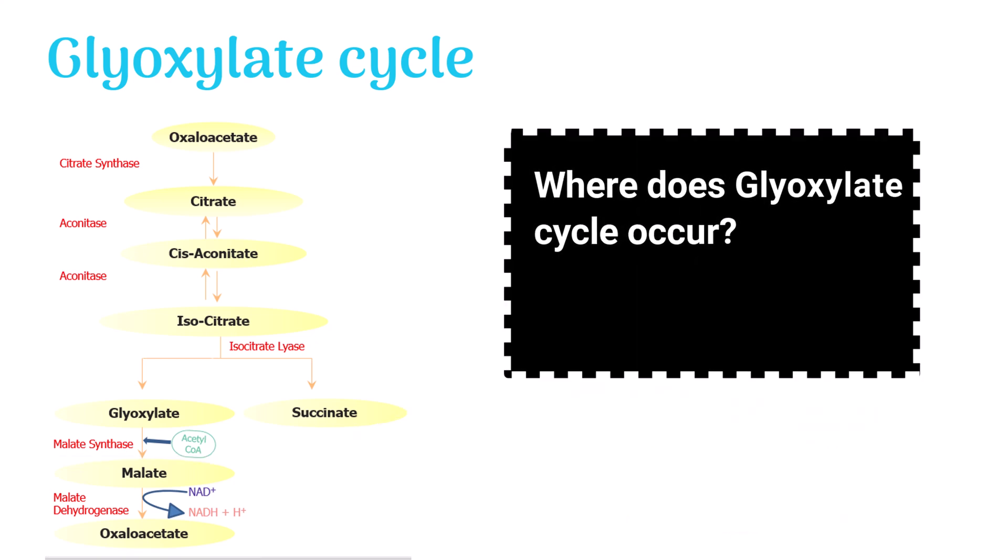Where does glyoxylate cycle occur? Let's see the answer. Glyoxylate cycle occurs in some plants and microorganisms. They undergo glyoxylate cycle in a specialized cellular organelle.